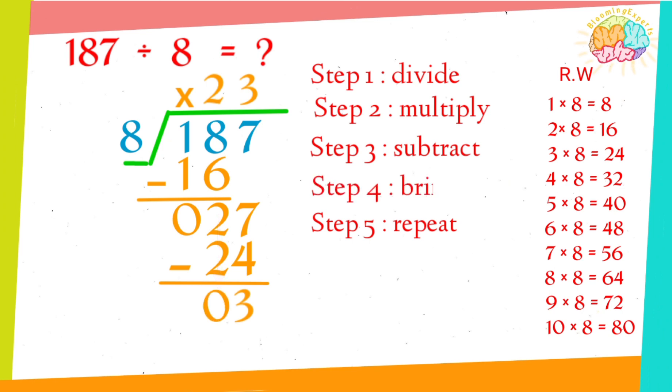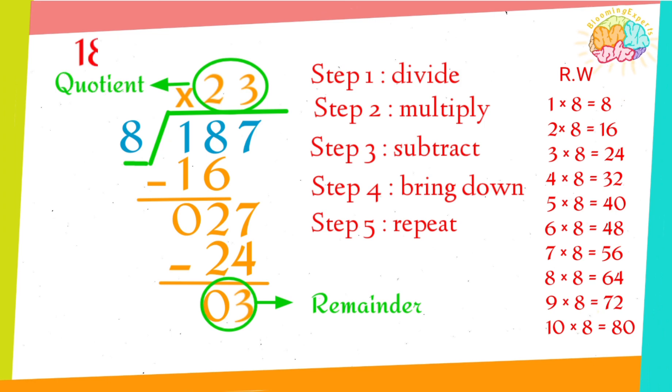Step 4: Bring down. As there are no more numbers in the dividend and 3 is less than 8, which is the divisor, so 3 is called the remainder, the remaining number not divided. And 23 is the quotient. So 187 divided by 8 equals quotient plus remainder, and here 23 plus 3.